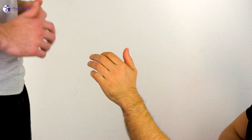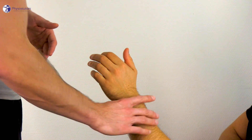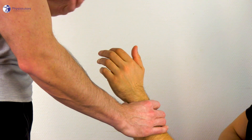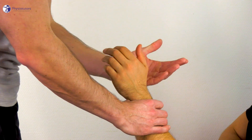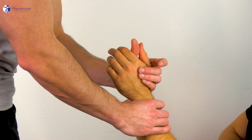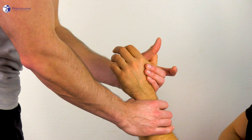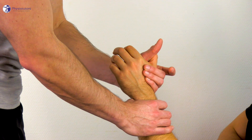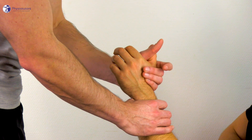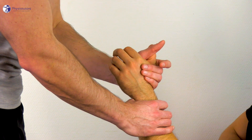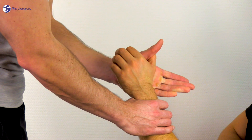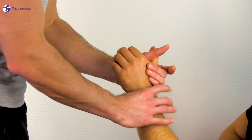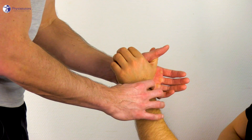With one hand, fixate the patient's forearm and your other hand grabs onto the patient's thumb and thenar eminence including the trapezi, like in an arm wrestling position. As it is hard to fixate the scaphoid on the dorsal side,